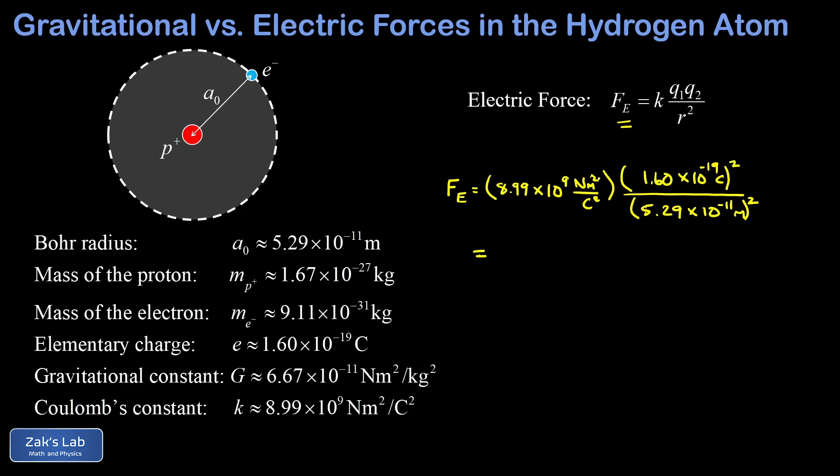Again, we can keep track of the units here. I have two factors of meters in this numerator, and those are going to cancel the meters in the denominator after we square them. So again, I have two factors of Coulombs in my denominator, canceling two factors of Coulombs in the numerator after we square that 1.6 times 10 to the negative 19 Coulombs. So again, our units come out to Newtons. And when we run the numbers on this to three significant digits, we get 8.22 times 10 to the negative eighth Newtons.